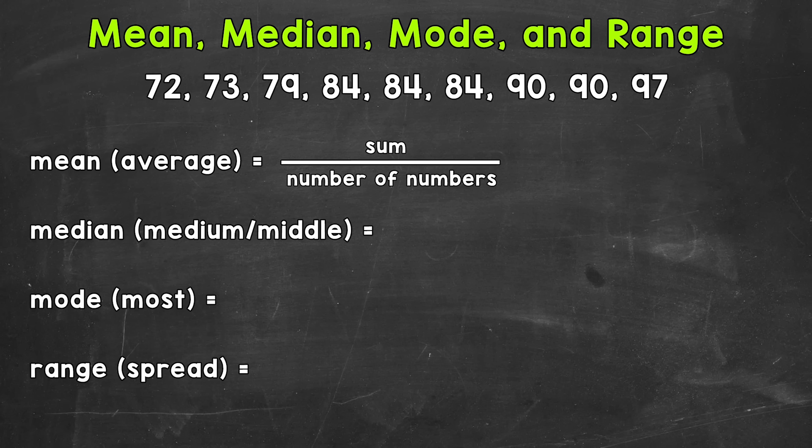So we're going to move on to mean, which is the average. Now we find the mean by adding all of the numbers up within our data. So we're finding the sum of the numbers and then we divide by the number of numbers within our data. So the sum for our example here is going to be 753. So we added 72 plus 73 plus 79, so on and so forth.